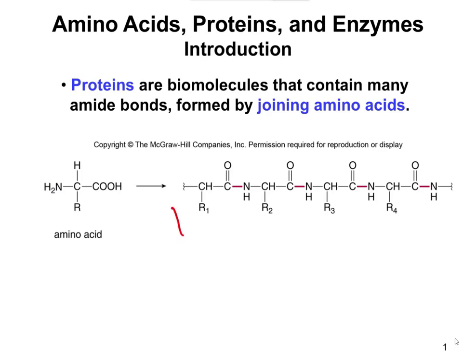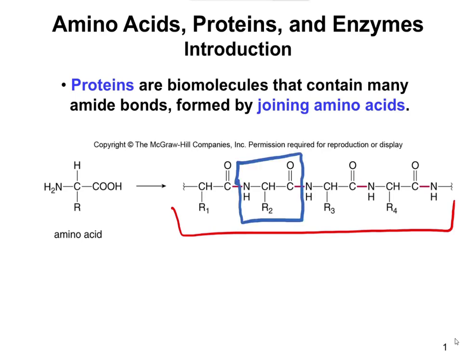On the right of this slide is an example of a protein — what it looks like when you link amino acids together. There is a repeating unit: N-H, C, H with an R group, and then C double bond O. That repeating unit is your repeating amino acid unit in a protein. By the end of the chapter, you should be able to identify this repeating unit.